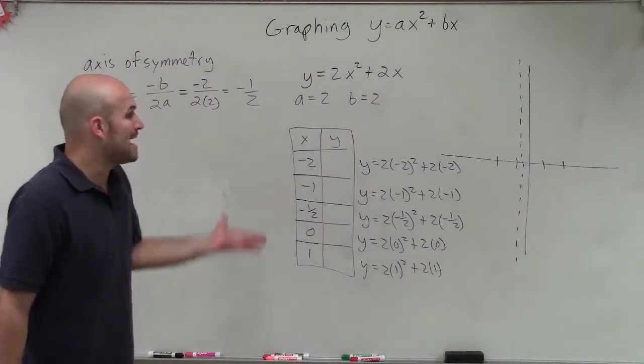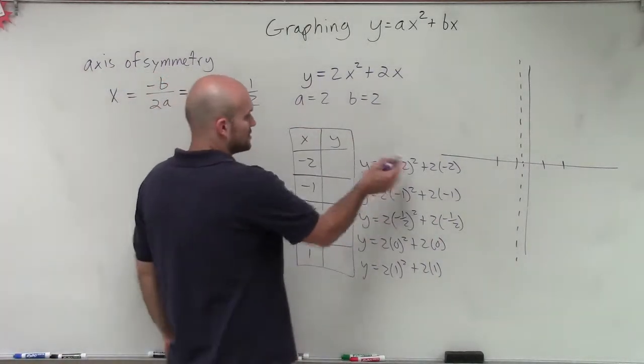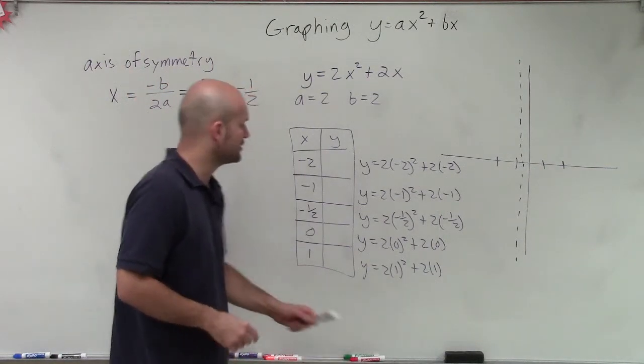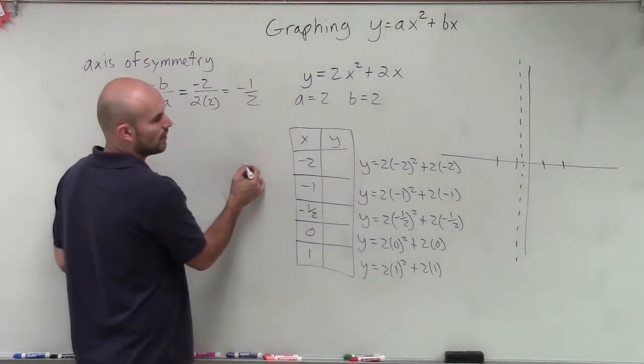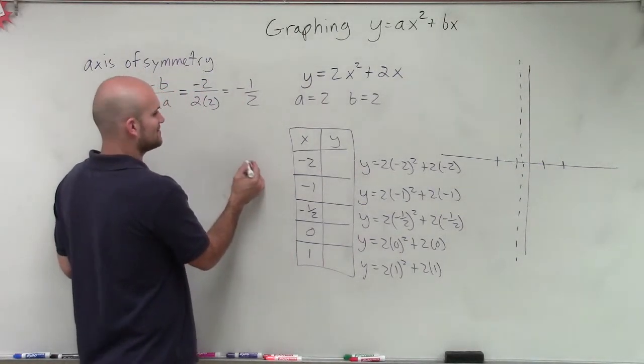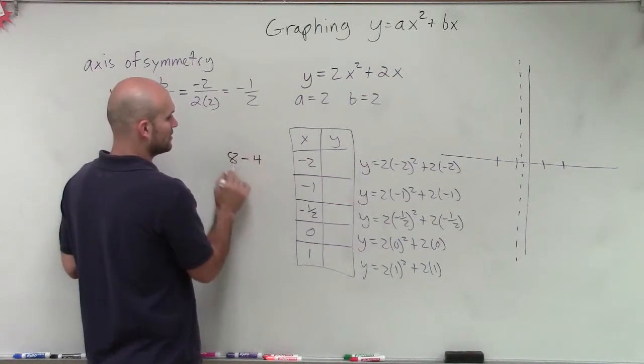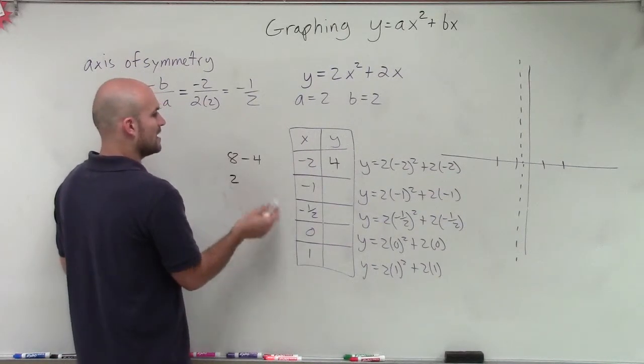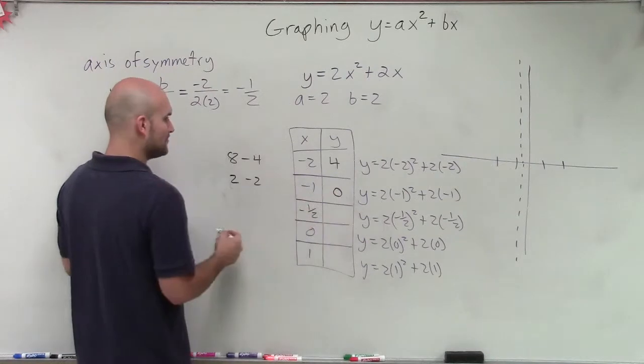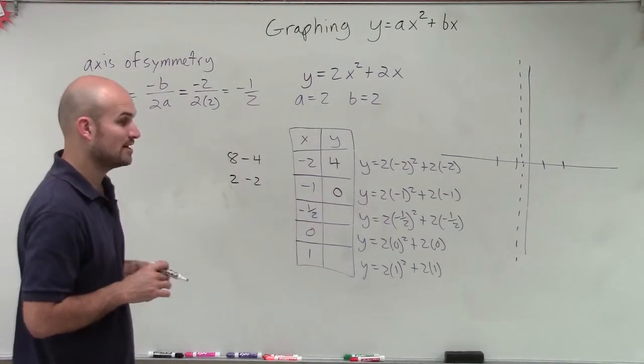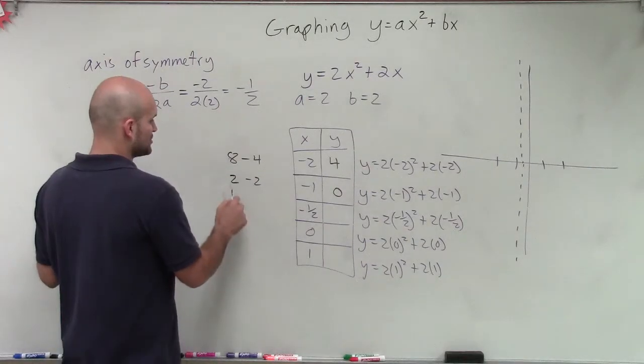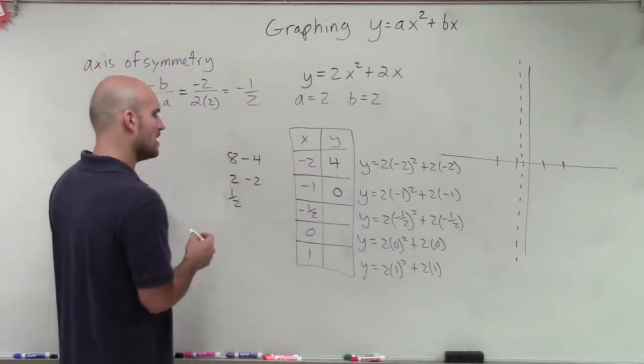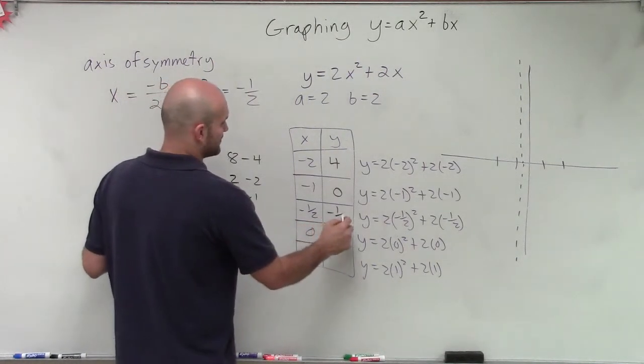So now we just need to do the math to figure out what my y coordinates are going to be. If I have negative 2 squared is positive 4 times 2 is 8, and then minus 4. 8 minus 4 gives me 4. Over here, I have negative 1 squared, which is 1 times 2. And that's going to be minus 2, which gives me 0. Here I have negative 1 half squared, which is 1 fourth, times 2, which is 1 half, plus 2 times negative 1 half, which is negative 1, which gives me negative 1 half.